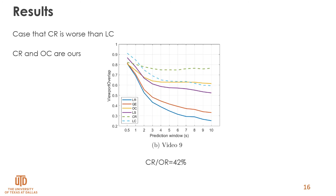For another video, for prediction windows delta greater than 3 seconds, clustering prediction accuracy is higher. 42% of predictions are made with clustering. For prediction at delta equal to 10 seconds, viewport overlap is 17% better than using LS. Clustering prediction works better for cases with strong regions of interest. This video has strong camera movement in one direction with a moving object always in the forward direction. Linear regression techniques perform much worse than clustering and last sample for longer prediction horizons.